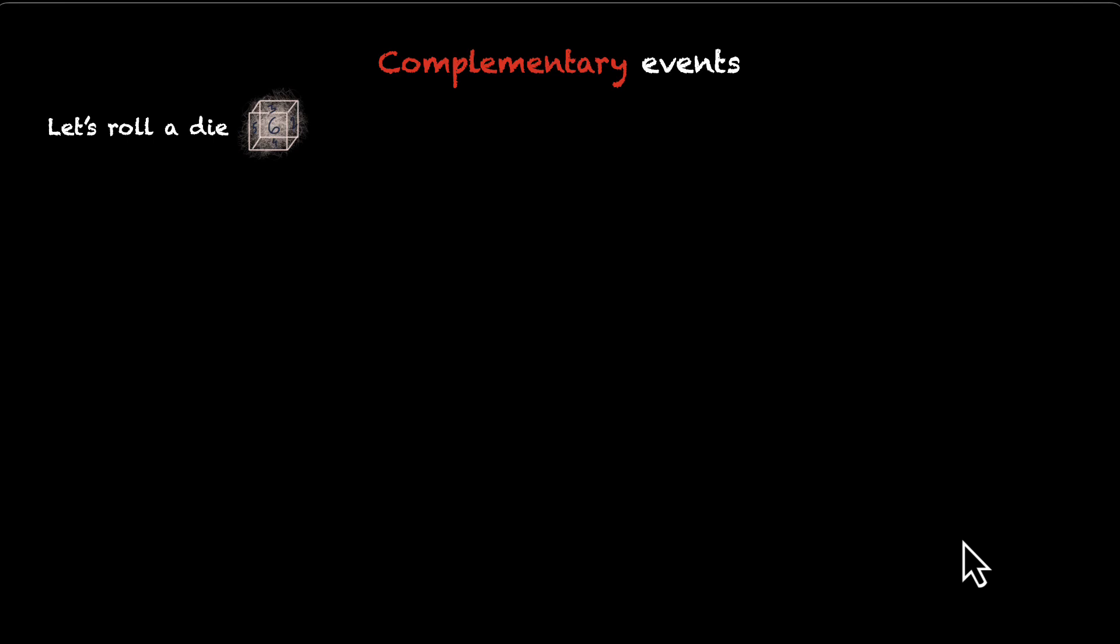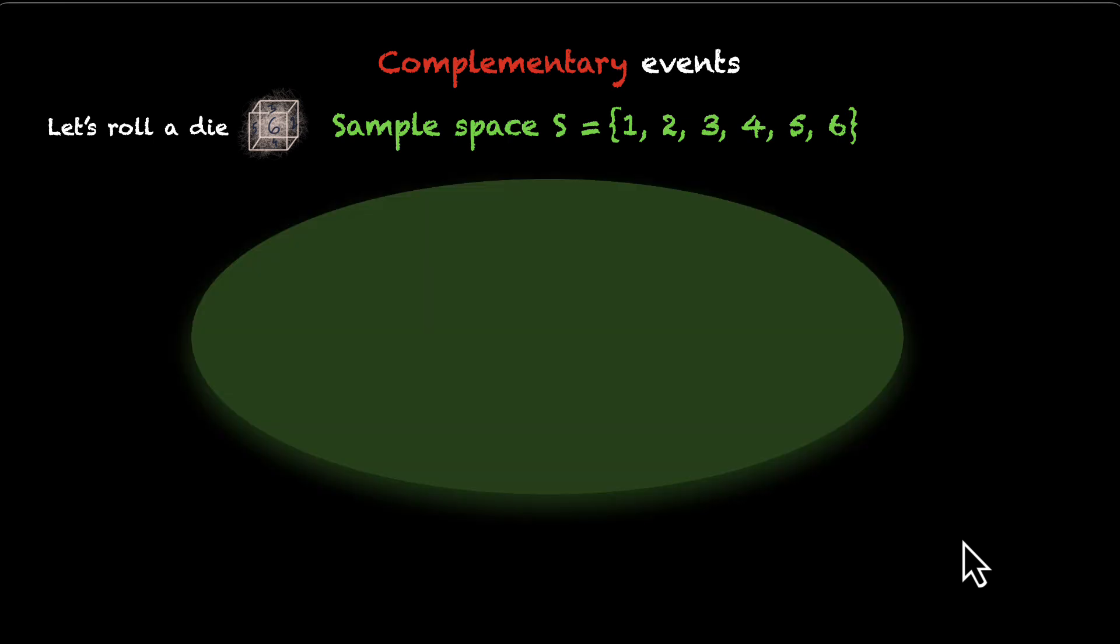Let's roll a die. When you roll a die, this is the sample space that you get. You get numbers from 1 to 6. Suppose you want to plot these numbers, and this is where you'll use your prior knowledge of the chapter, sets. So, let's try to visualize. This is your sample space. Let's put our sample points down. We have 1, 2, 3, 4, 5, and 6.